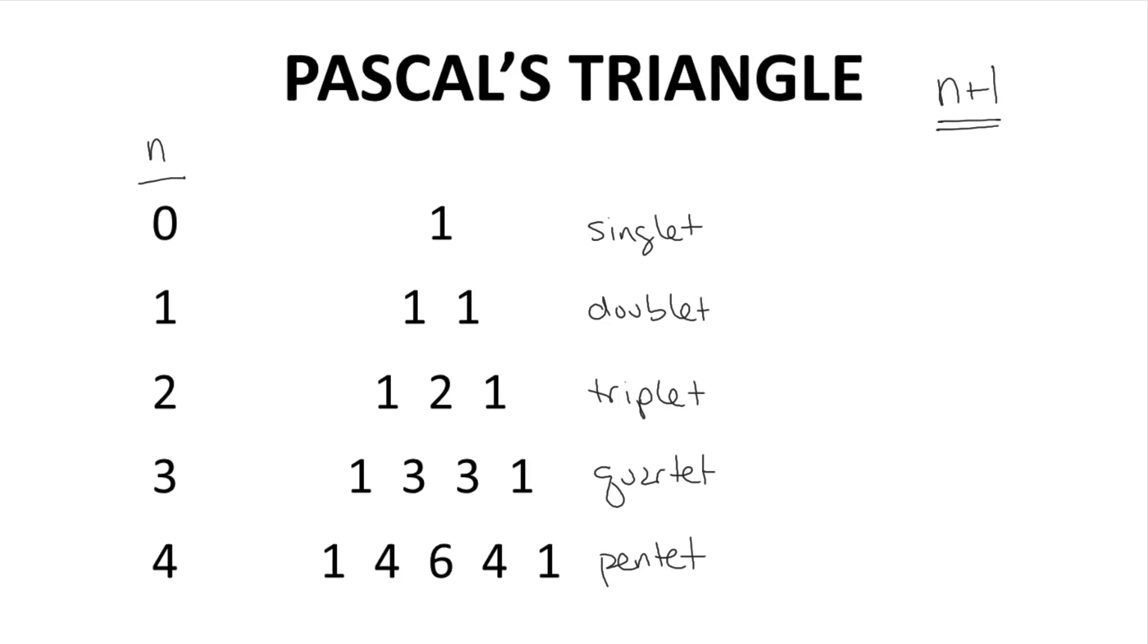What isn't obvious from Pascal's triangle is that the split peaks become less intense than the original peak. So for a doublet, the relative intensity of the peaks in the doublet is one to one, but each peak in the doublet is half the intensity of the original singlet. The triplet with a one to two to one relative intensity has an actual intensity of 0.25, 0.50, 0.25. So the total intensity is still just one.